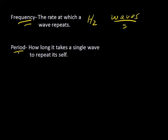The period of a wave is how long it takes a single wave to repeat itself. If you're standing on the beach and a wave lands at your feet, and then one second later another wave lands, the time between wave crests — the time it takes for the wave to repeat itself — would be one second. The period is measured in seconds per wave.